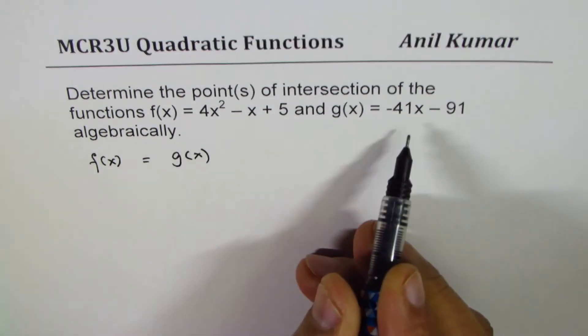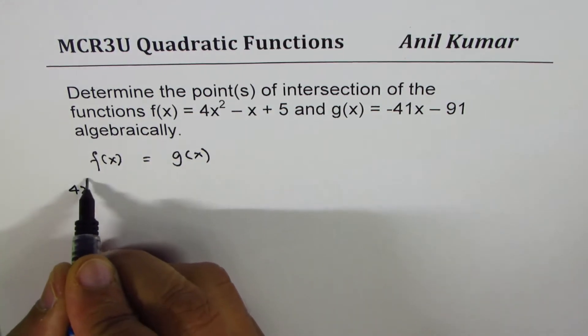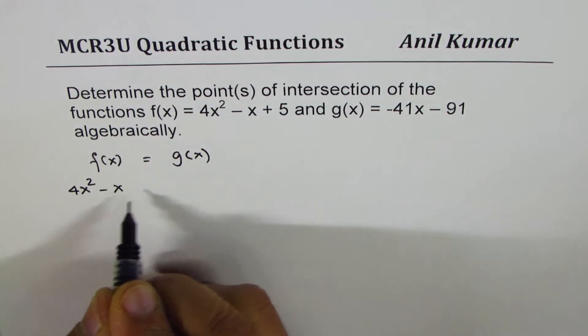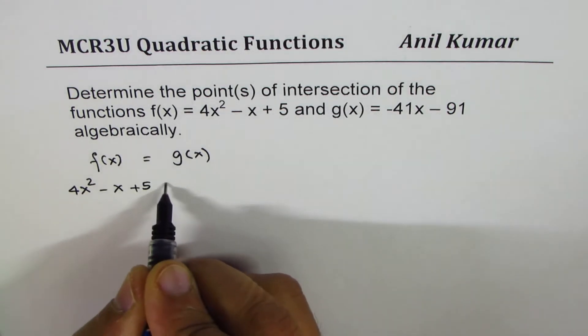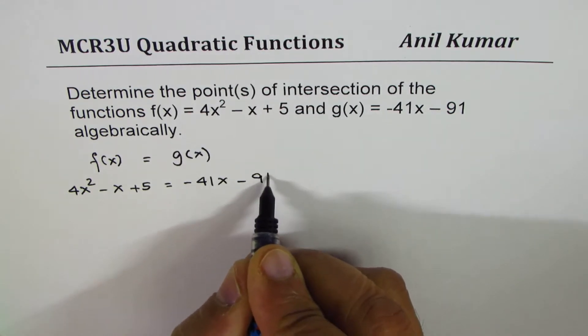Okay, so let's equate these two equations. We have 4x² - x + 5 equal to g(x) which is -41x - 91.